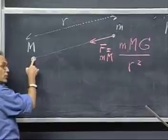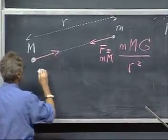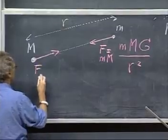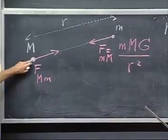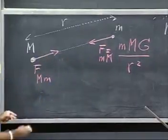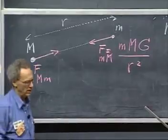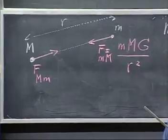This object, since Newton's third law holds, action equals minus reaction, this force which capital M experiences due to little m is exactly the same in magnitude but opposite in direction. And that is the universal law of gravity.